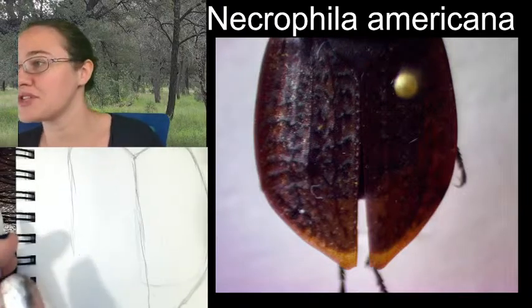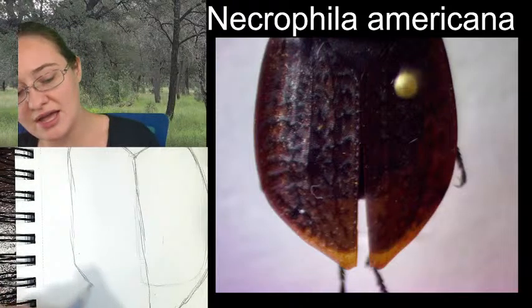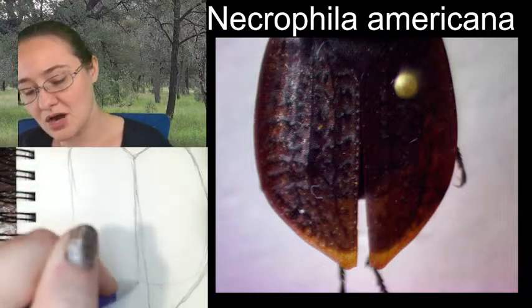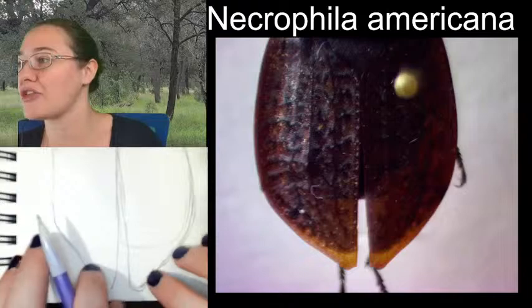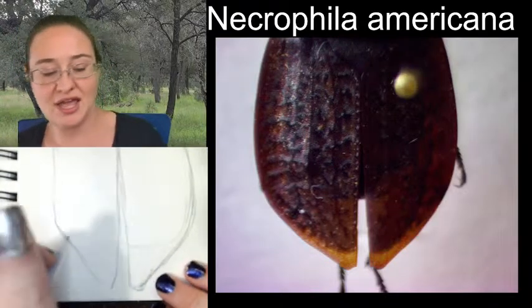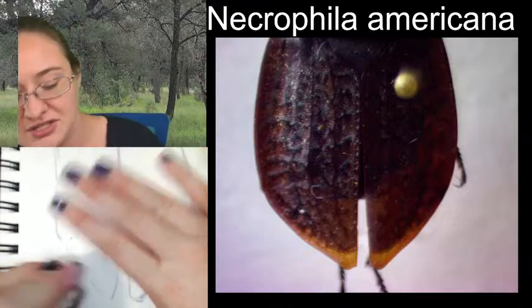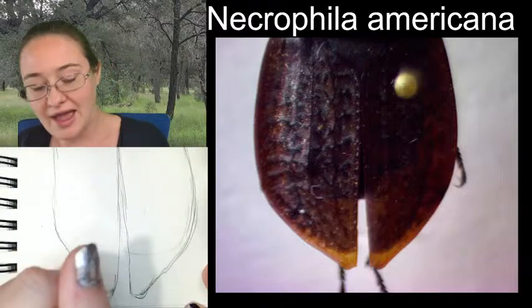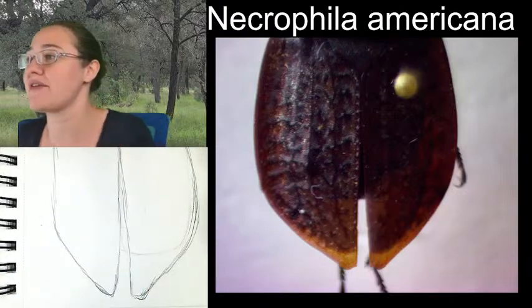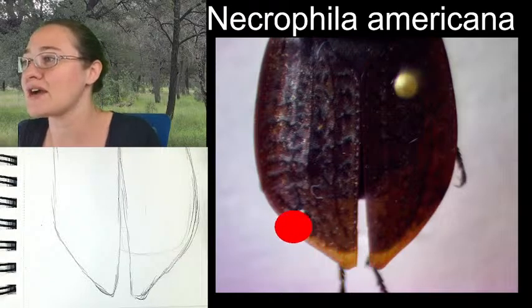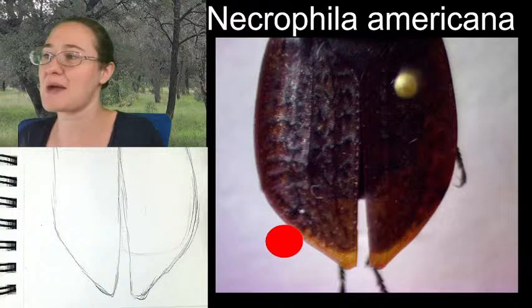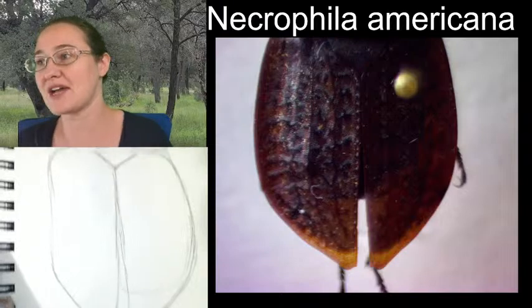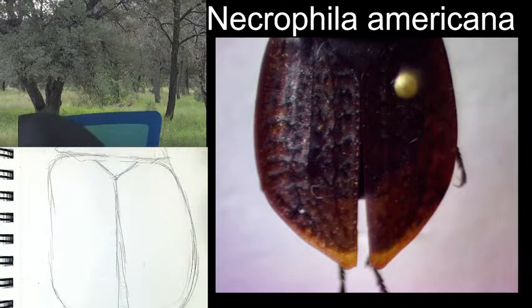Most of the time the elytra on the American carrion beetle are dark all the way down — black to the wing tips. But there's a small group, still the same species, that mostly live in the Midwestern region, and they will have yellow tips on the ends of their elytra. You can see yellow tips on the top of this elytra here. This specimen was collected in Michigan, in Jackson County.